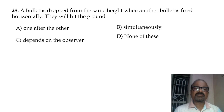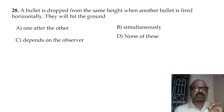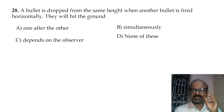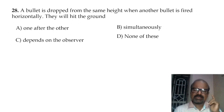A bullet is dropped from the same height when another bullet is fired horizontally. Both experience the same acceleration due to gravity, which is relevant for CET level questions.